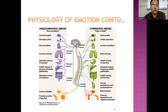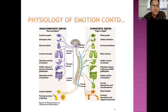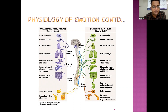The parasympathetic nerves — rest and digest — when active result in: constricted pupils, stimulated saliva, slowed heartbeat, constricted airways, stimulated activity of stomach, inhibited release of glucose, stimulated gallbladder, stimulated activity of intestines, contracted bladder, and promotion of erection of genitals.